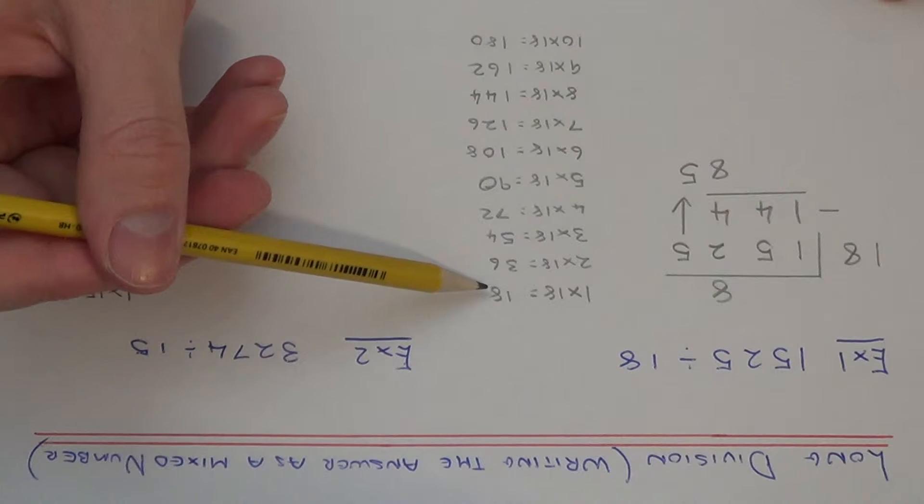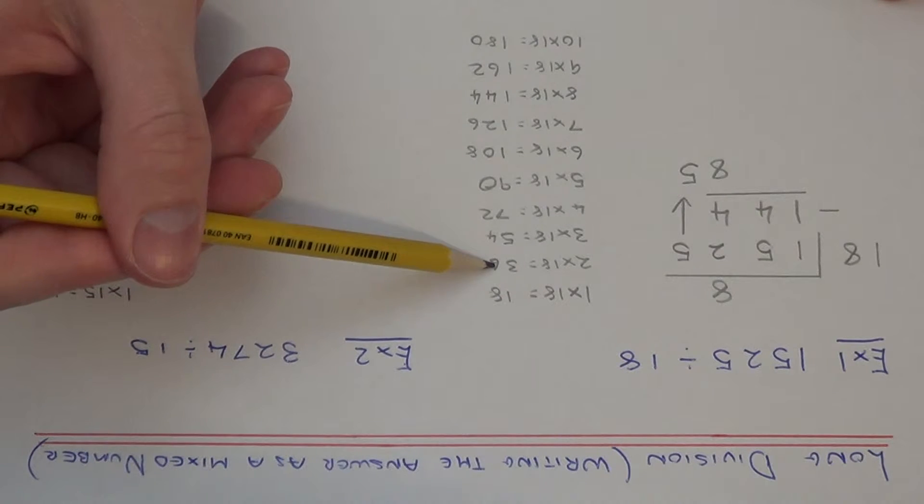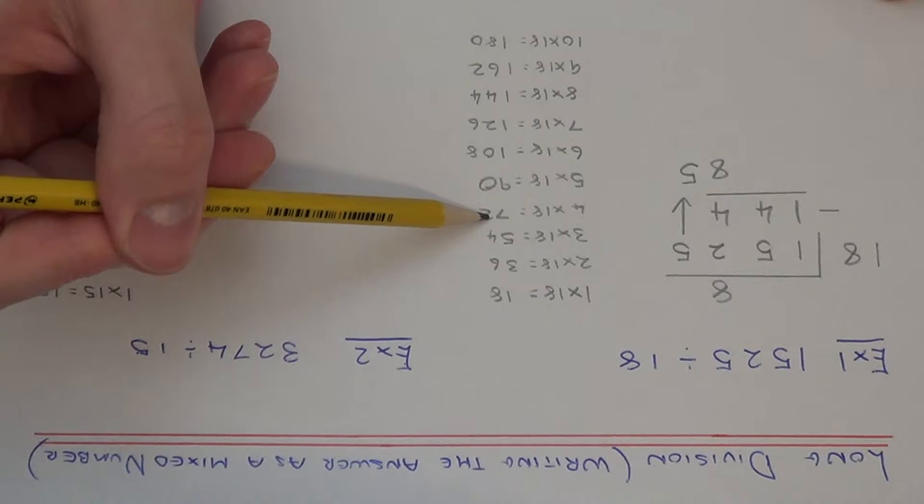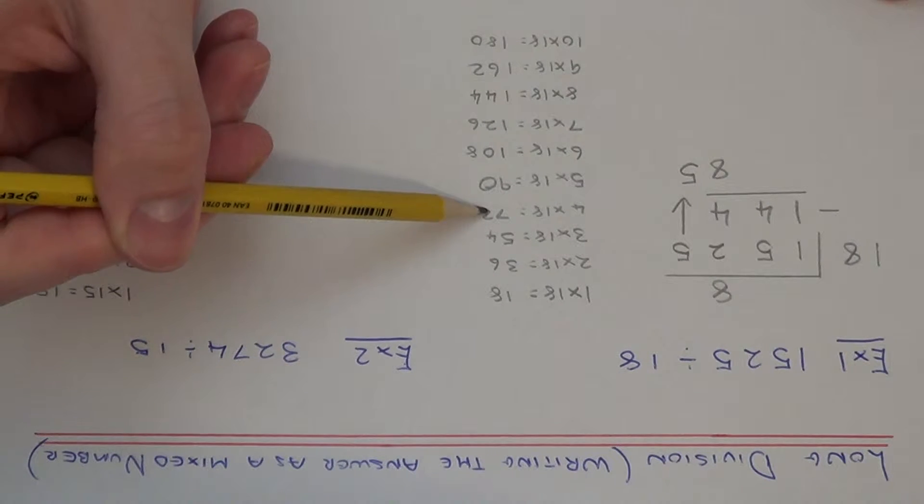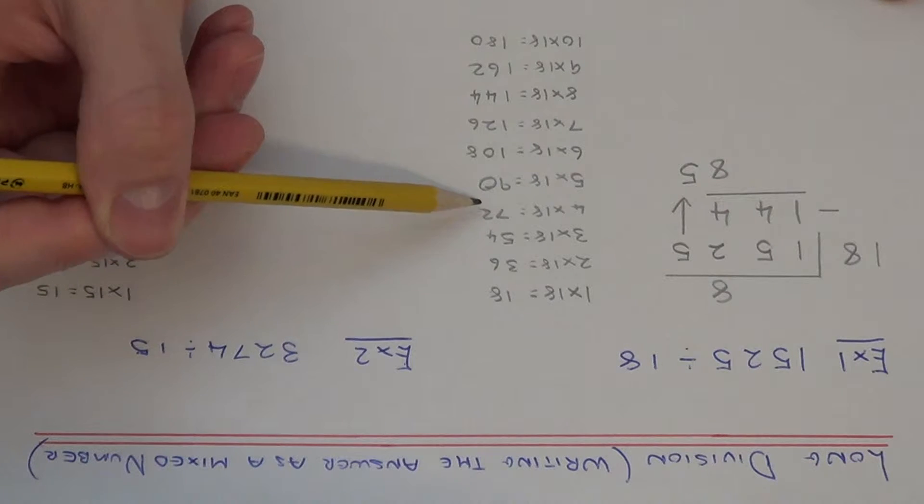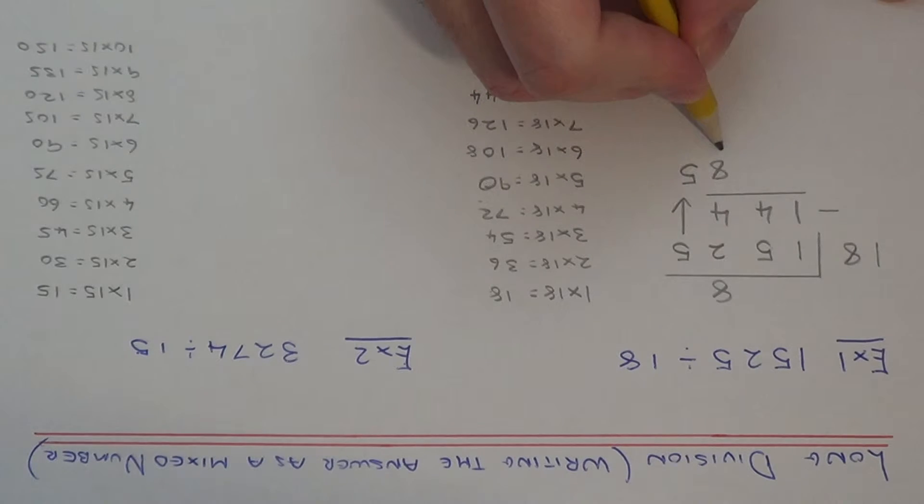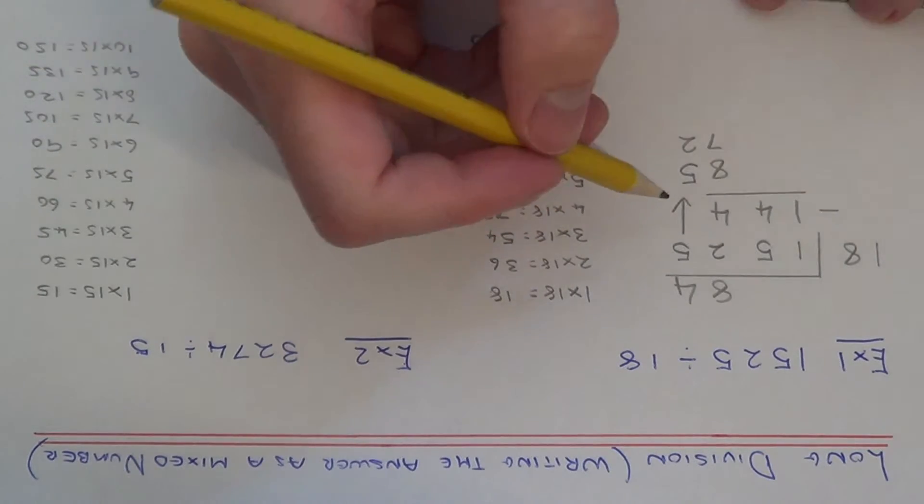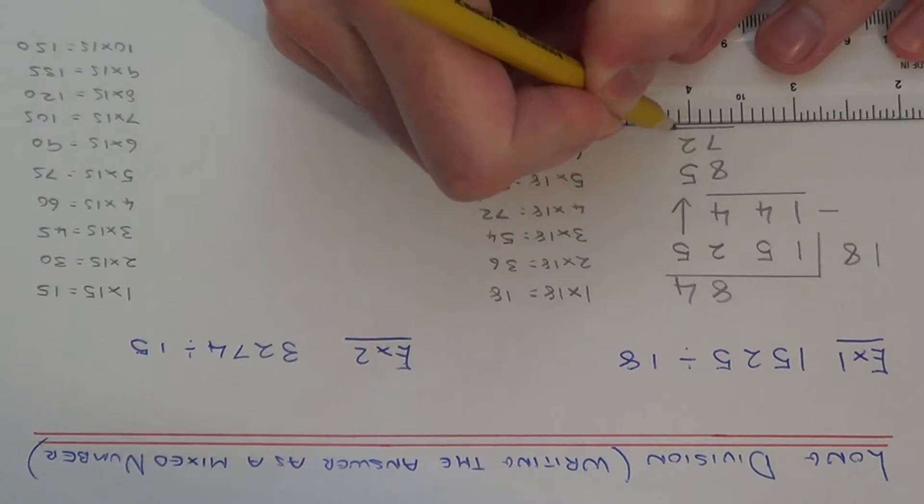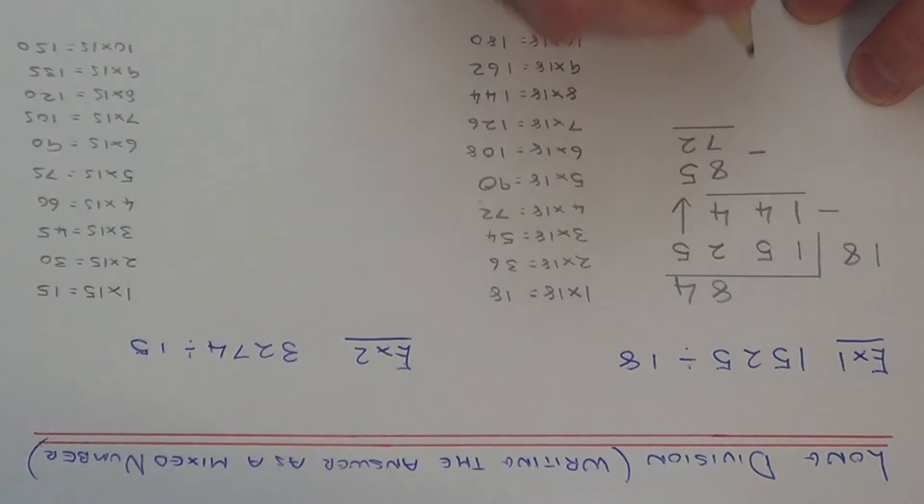We just need to now work out 85 divided by 18. So again, look for your best multiple of 18. We have 18, 36, 54, 72, 90. 90 is too big, so 72 is our best one. So that's 4 times 18. If we write 72 underneath and put the 4 at the top. If we take away 72 from 85, that leaves us with 13.